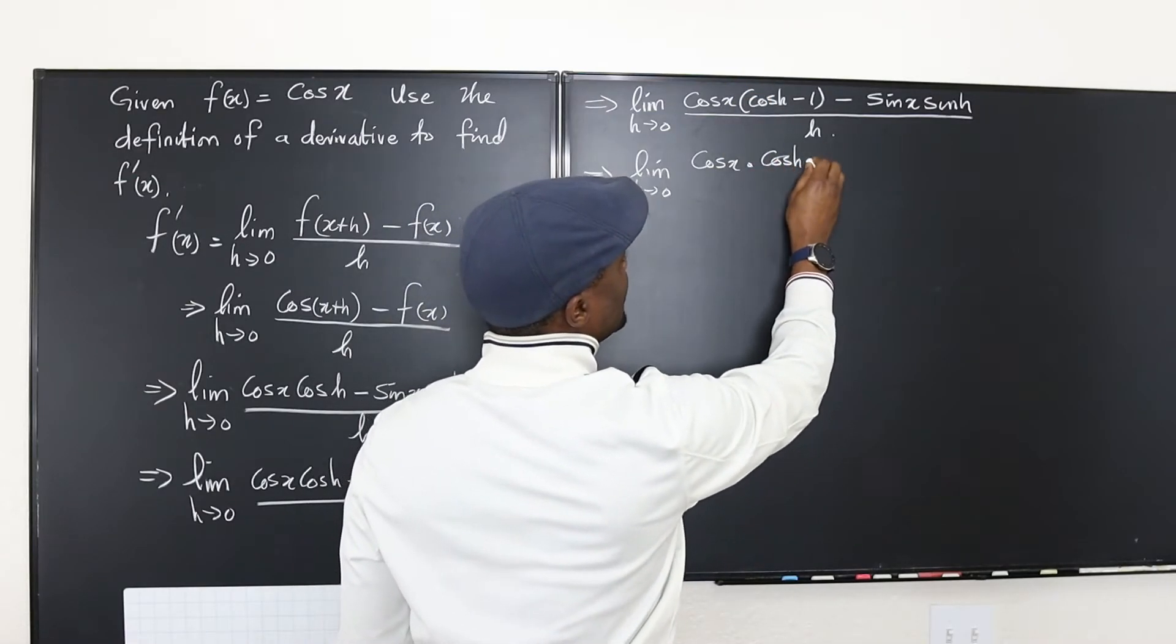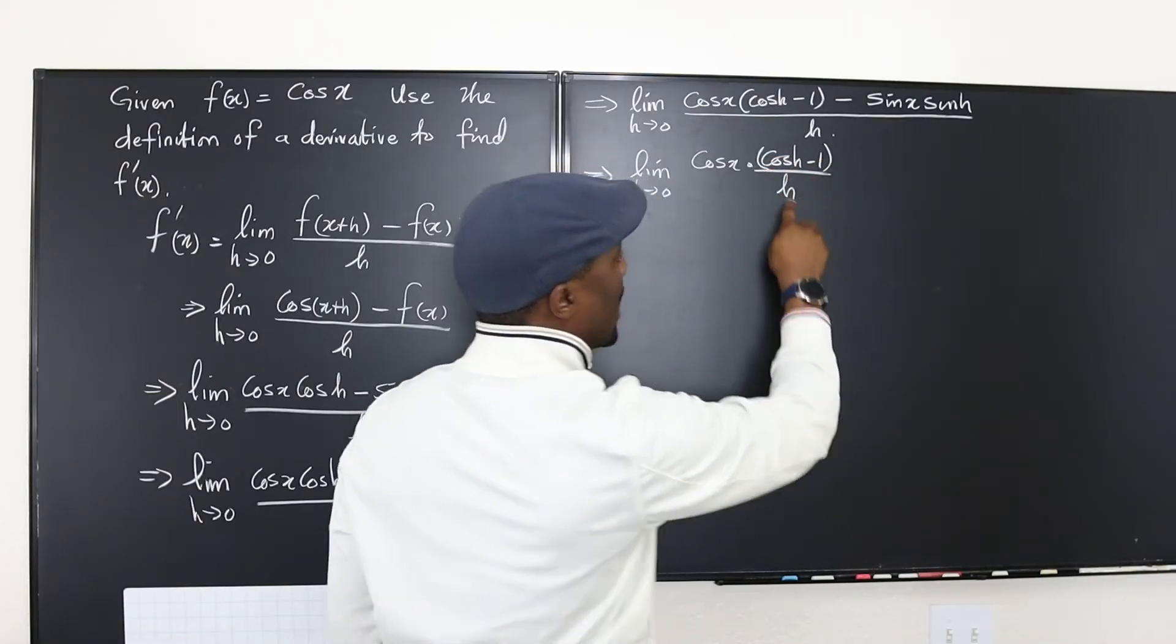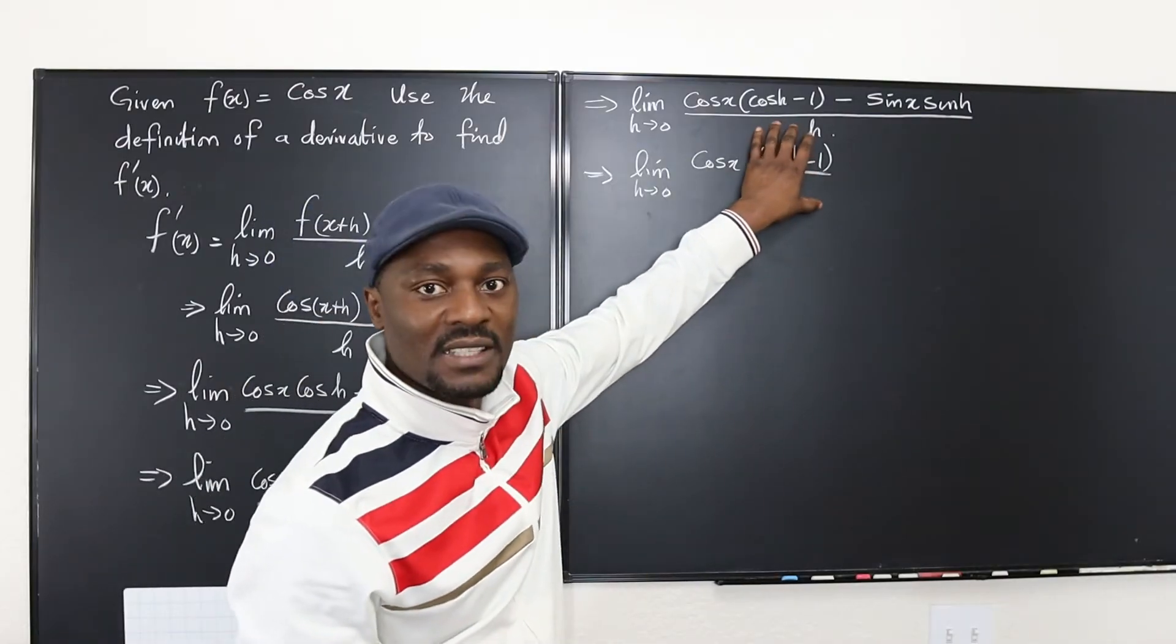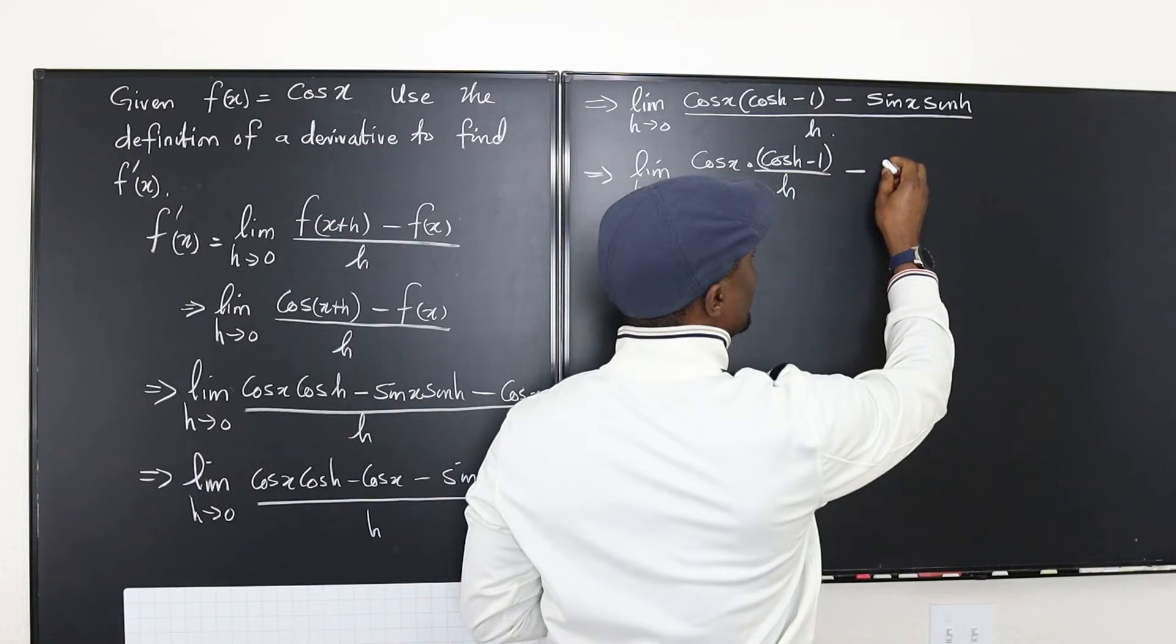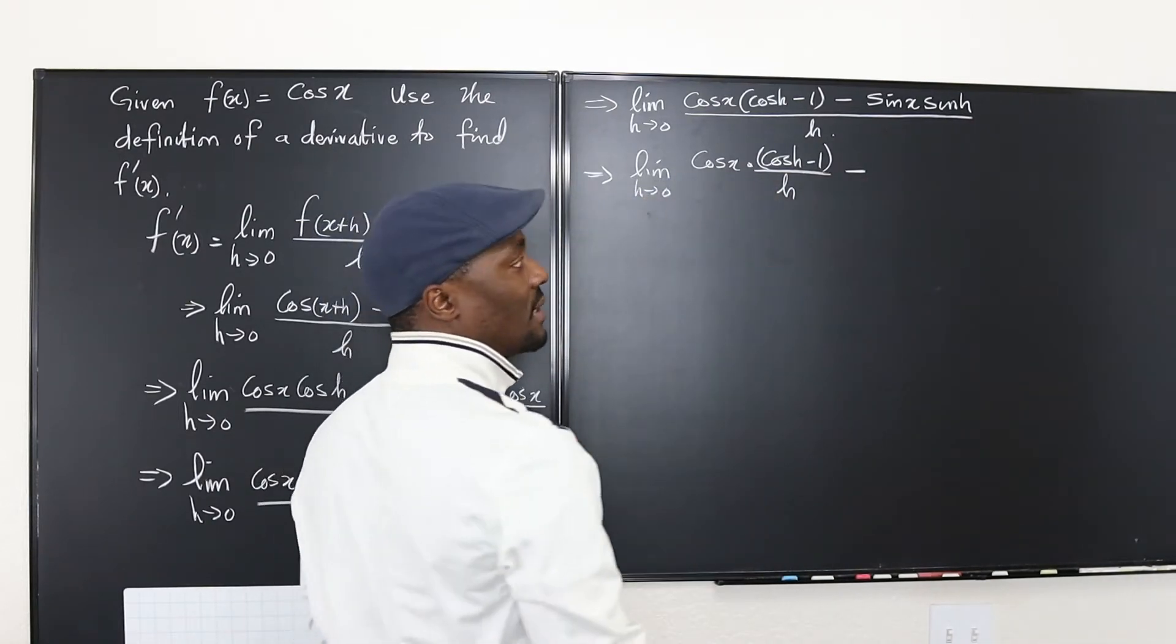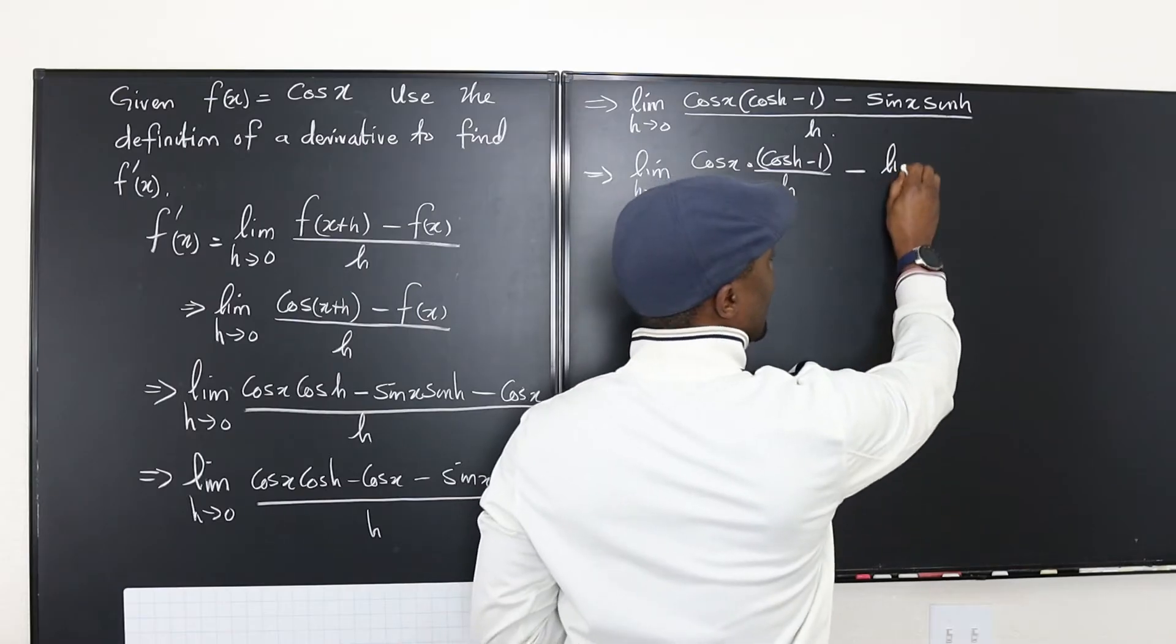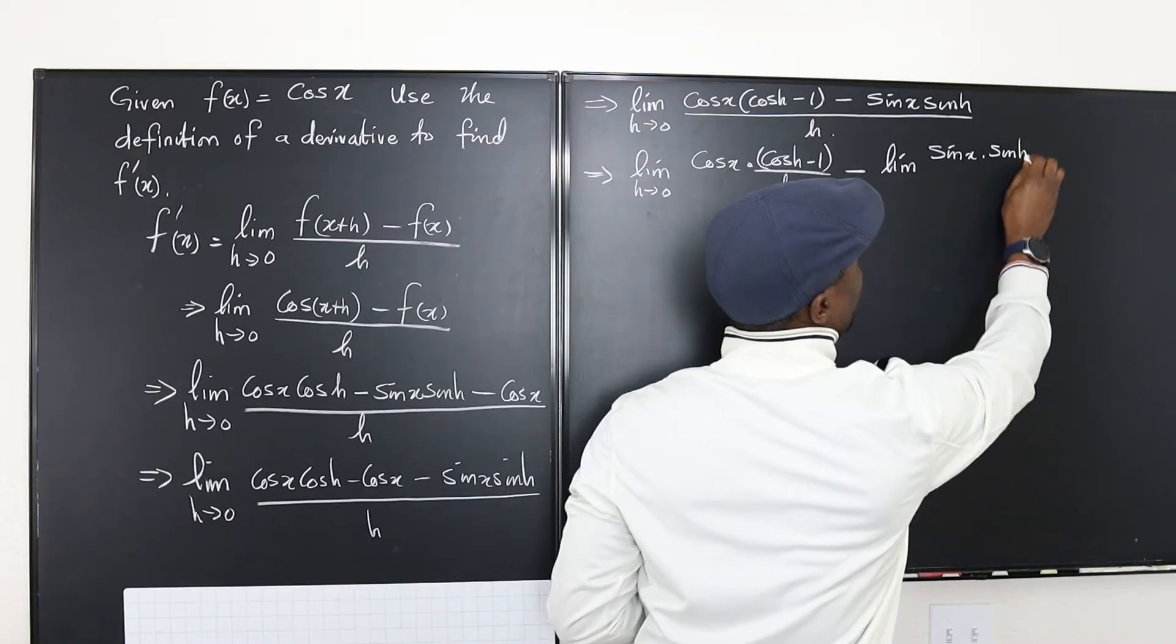It's gonna be cosine h minus 1. I'll put the h just under this one. Okay because I need this identity. Okay minus and this will be because I'm splitting it I will take apply the limit to the other side too. Okay limit of sine x multiplied by sine h over h.